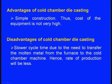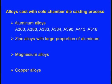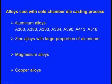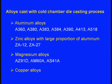Alloys cast with cold chamber die casting: aluminum alloys A360, A380, A383, A384, A390, A413, and A518. Among zinc alloys: ZA12 and ZA27. Among magnesium alloys: AZ91D, AM60A, AS41A. Most copper alloys can also be cast using cold chamber die casting.